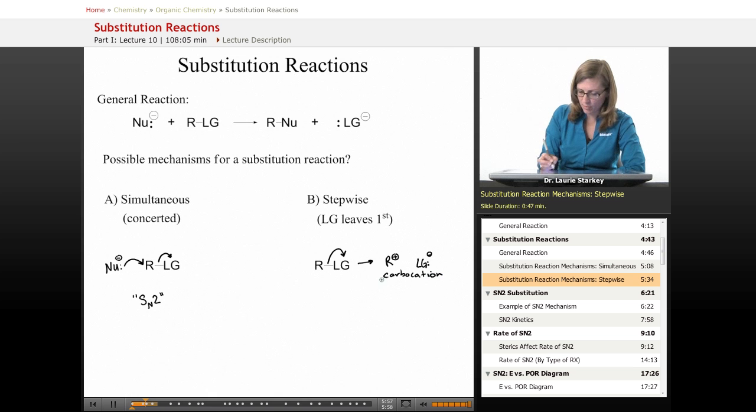That carbocation could combine with the nucleophile to give our substitution product. In fact, that mechanism happens as well. This mechanism is known as the SN1 mechanism. We're going to be learning both about this concerted mechanism and this stepwise mechanism—the SN2 and the SN1.